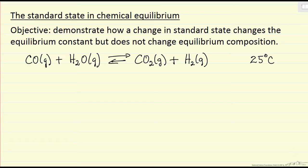I want to better understand this idea of a standard state that we pick when we calculate an equilibrium constant for a chemical reaction. What we're going to look at is what happens if we change the standard state — it's going to change our equilibrium constant, and we'll show it doesn't change the equilibrium composition.